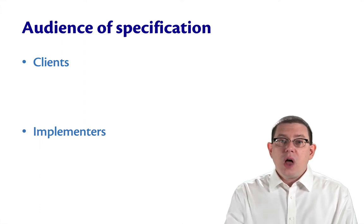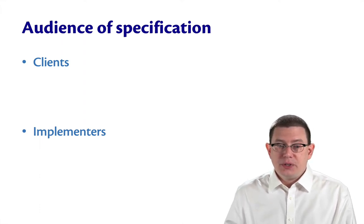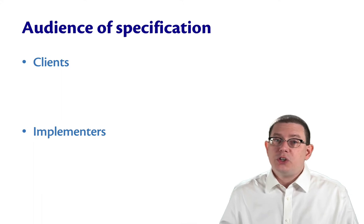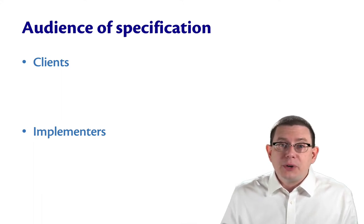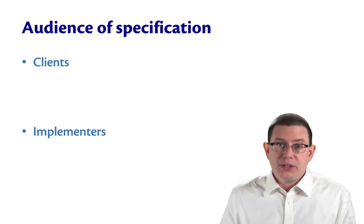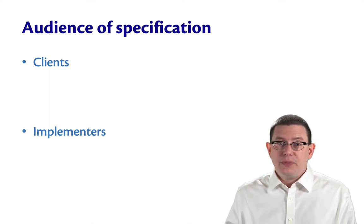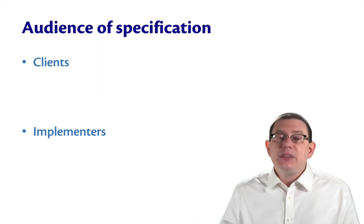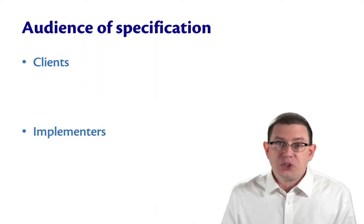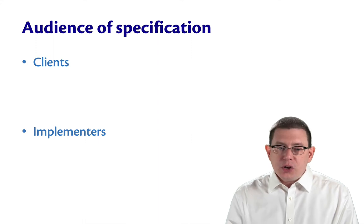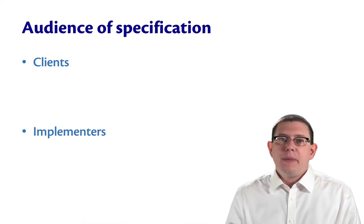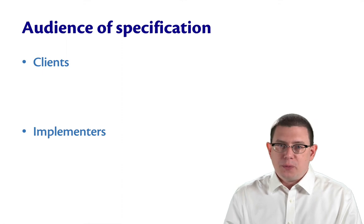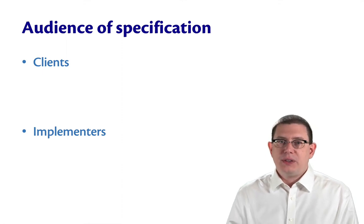There are clients and implementers. The clients are the people who are going to consume the specification — perhaps it's a standard library, for example, and you're the client because you're reading the documentation in the standard library. The implementers are the people who are going to be maintaining the code, or perhaps writing it the first time. These are the people who need to understand maybe more pieces, maybe lower level pieces, of the specification than the clients do.